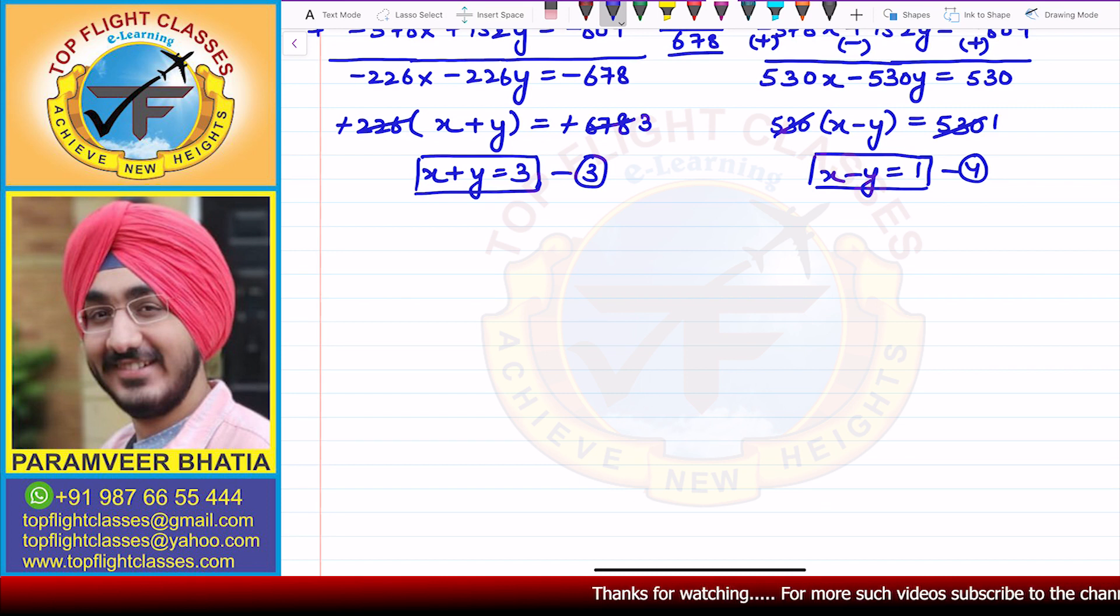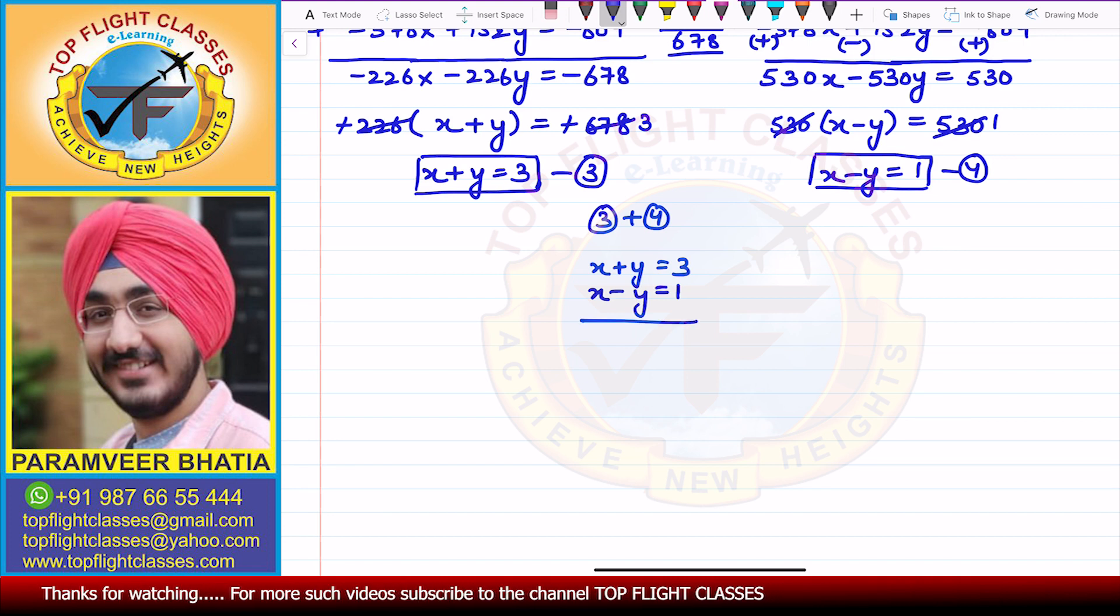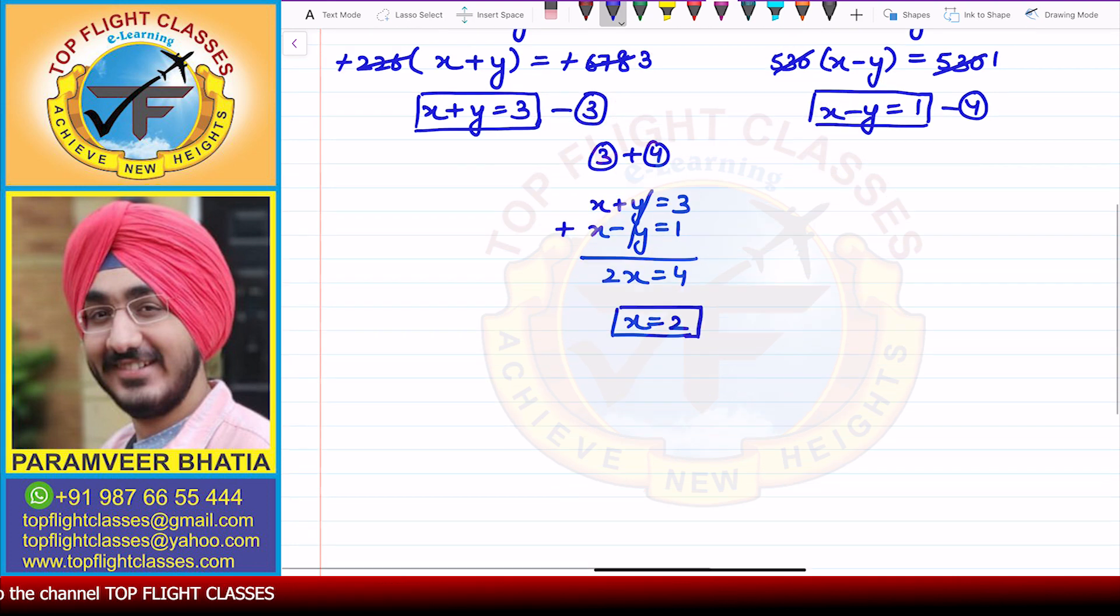Now if you add these equations directly, when you add these equations, then the y will eliminate. So x + y = 3, x - y = 1. When I add them, y cancels. So here it will be 2x = 4. So x's value is 2.